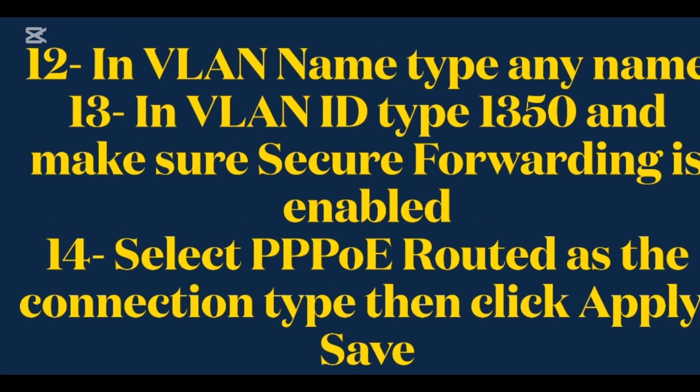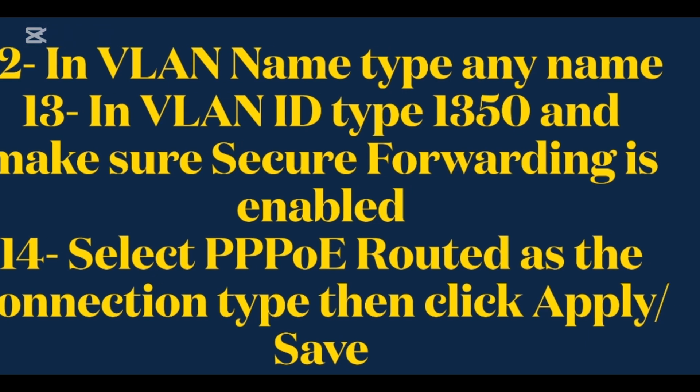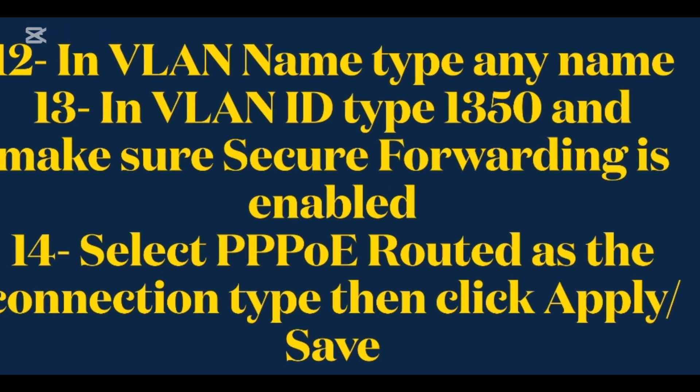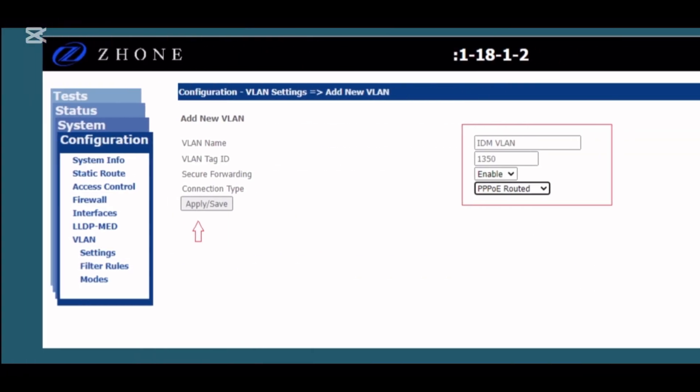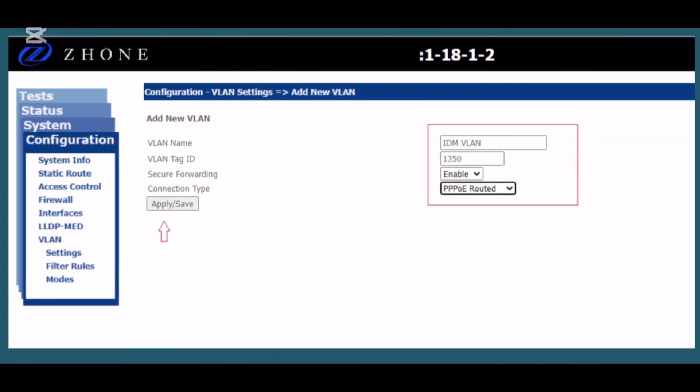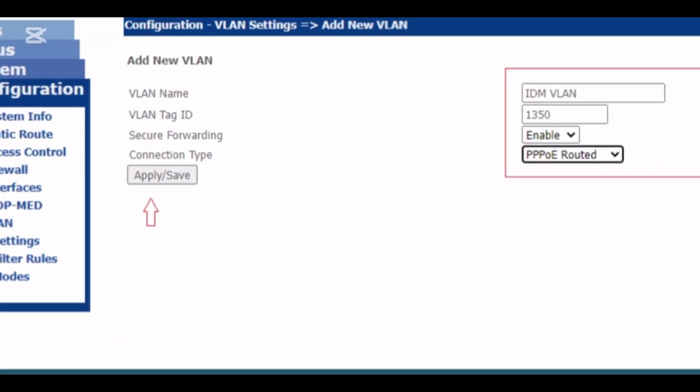In VLAN Name, type any name. In VLAN ID, type 1350 and make sure secure forwarding is enabled. Select PPPoE Routed as the connection type, then click Apply Save.